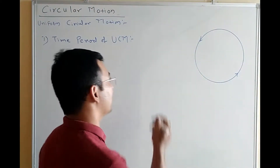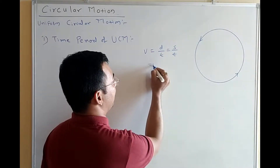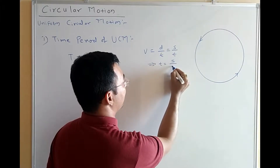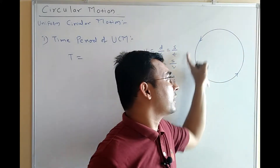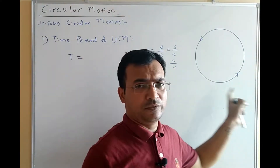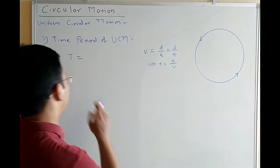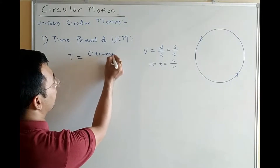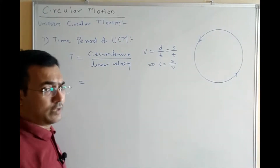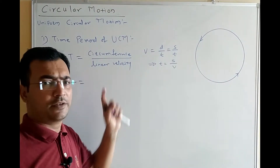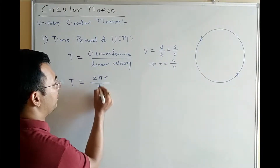How much time does a particle take to complete one circle? We know that velocity is given by distance upon time: v = s/t, so t = s/v. The particle moves along the circumference, so the distance for one full revolution is the circumference, which equals 2πr. Therefore, the time period T is given by circumference divided by linear velocity: T = 2πr/v. This is equation number 1.